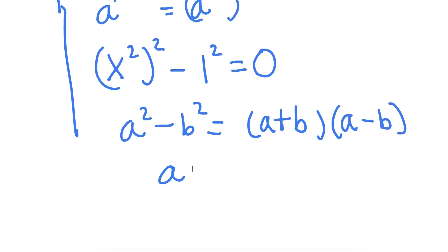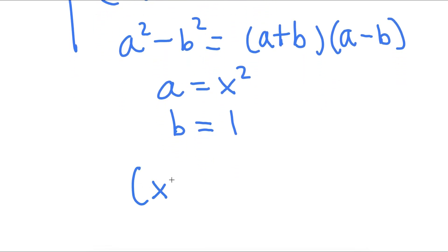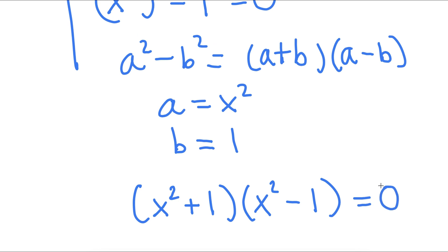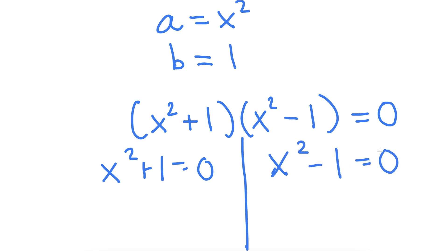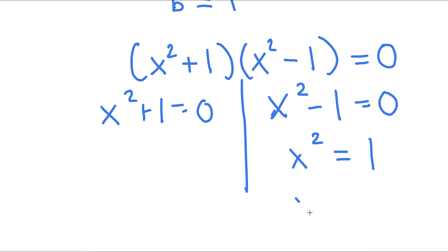In this case, a is x squared and b is 1. So now I have x squared plus 1 times x squared minus 1, equal to 0. This gives me two equations again: x squared plus 1 equals 0, and x squared minus 1 equals 0. For x squared minus 1 equals 0, I add 1 to both sides and get x squared equals 1, meaning x equals positive or negative 1.